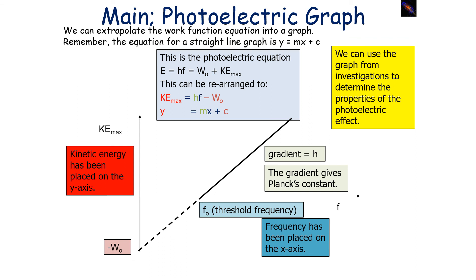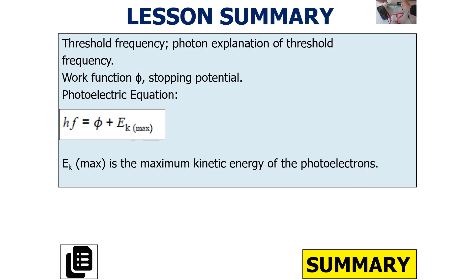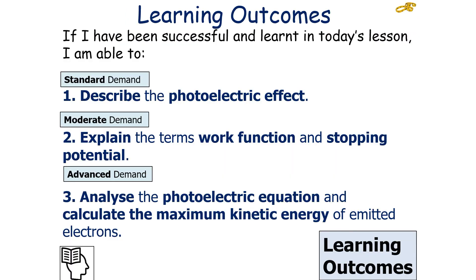We can use the graph from investigations to determine properties of the photoelectric effect. To summarise today's lesson: we've looked at threshold frequency and a photon explanation of it, work function and stopping potential, and the equation hf = work function + maximum kinetic energy of photoelectrons. If we've been successful, we can describe the photoelectric effect, explain the terms work function and stopping potential, and analyse the photoelectric equation to calculate the maximum kinetic energy of emitted electrons.